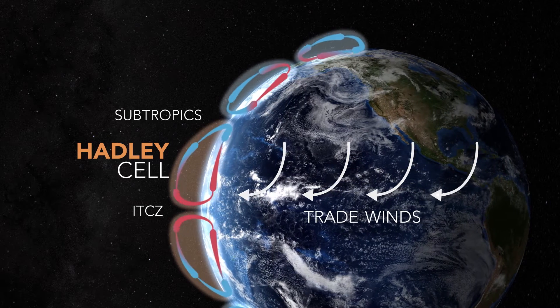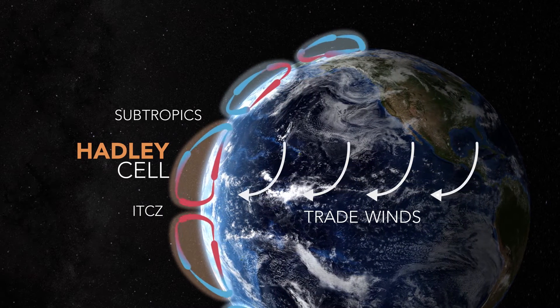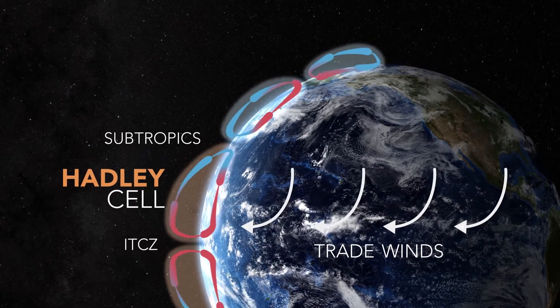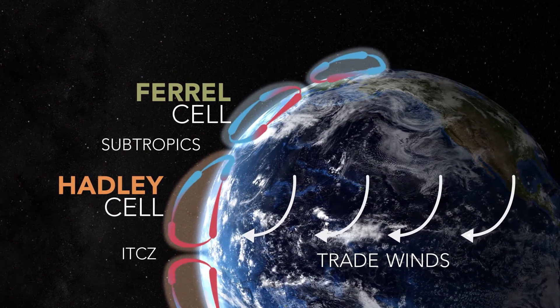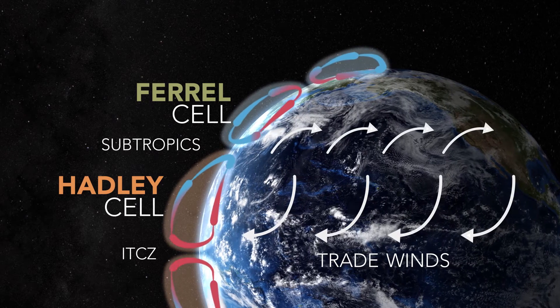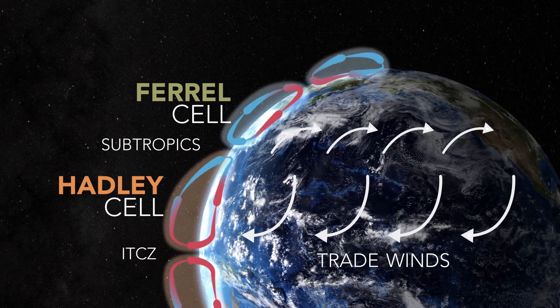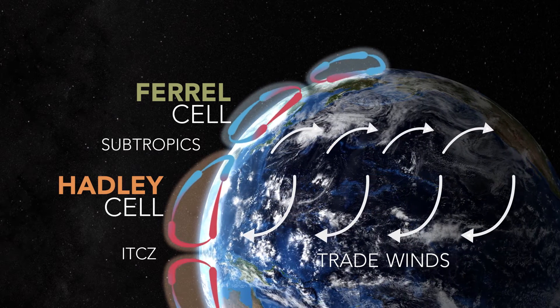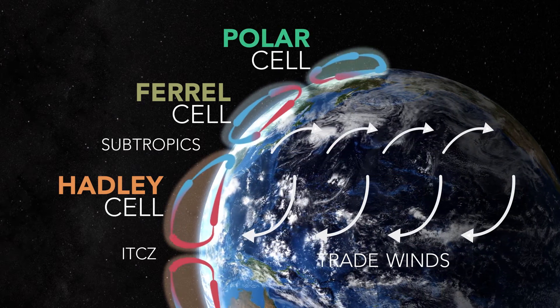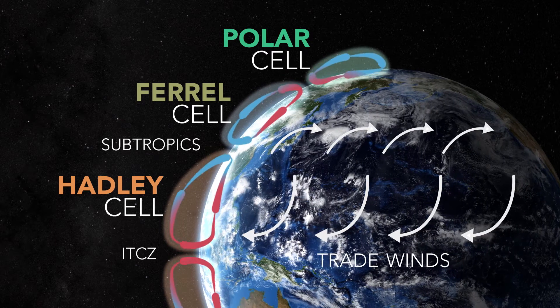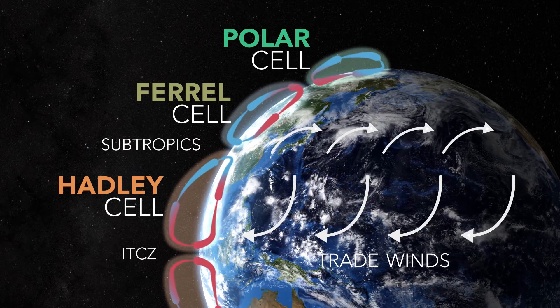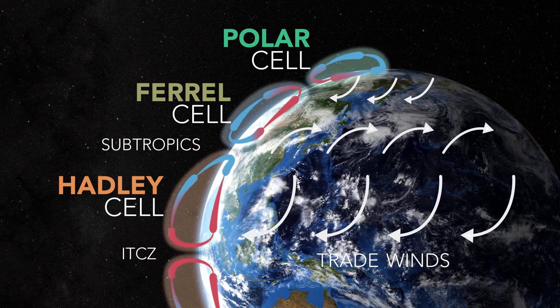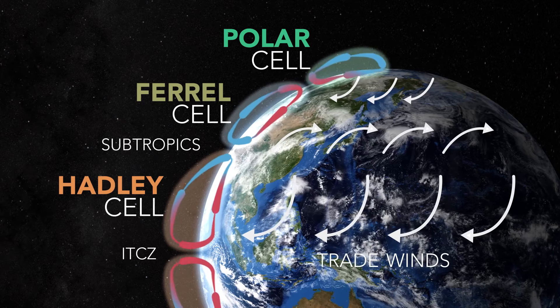The second cell, in the mid-latitudes, is called the Ferrell cell. The Ferrell cell causes westerly winds in the mid-latitudes, and is the reason why we look to the west when we make weather forecasts. The third cell, at the poles, is called the Polar cell. This is the smallest and the weakest of the three cells in the atmosphere. Air in these cells sink over highest latitudes, and flows towards the lowest latitudes at the surface.